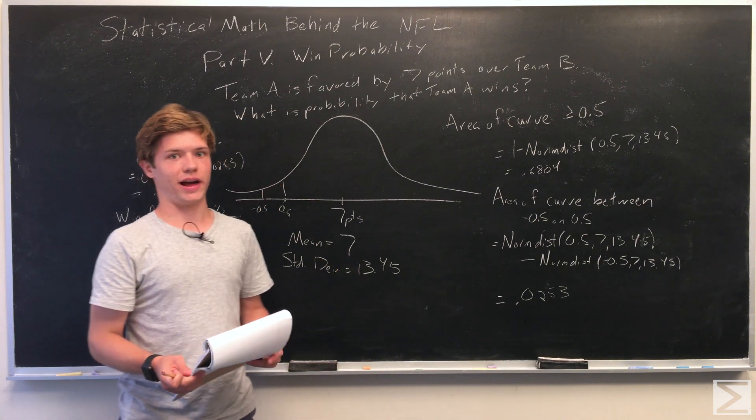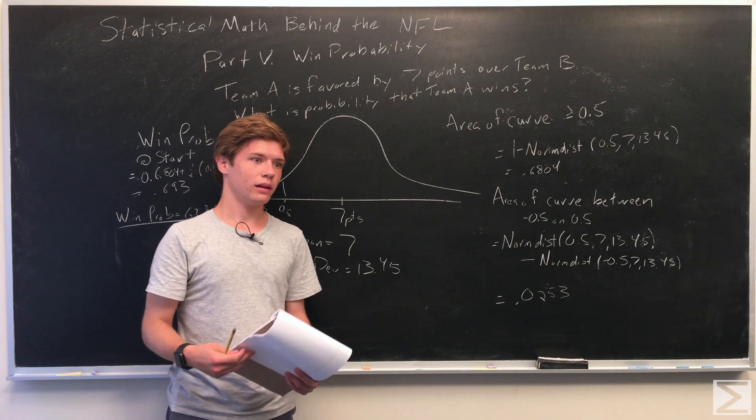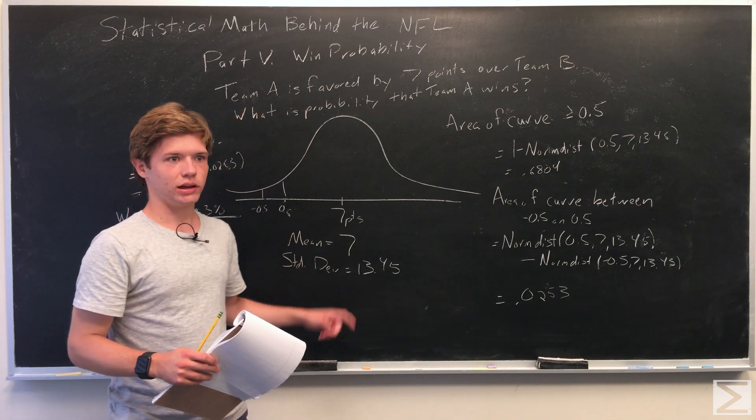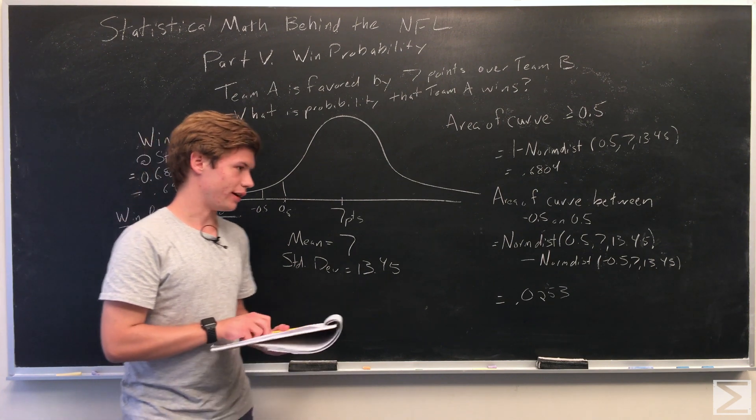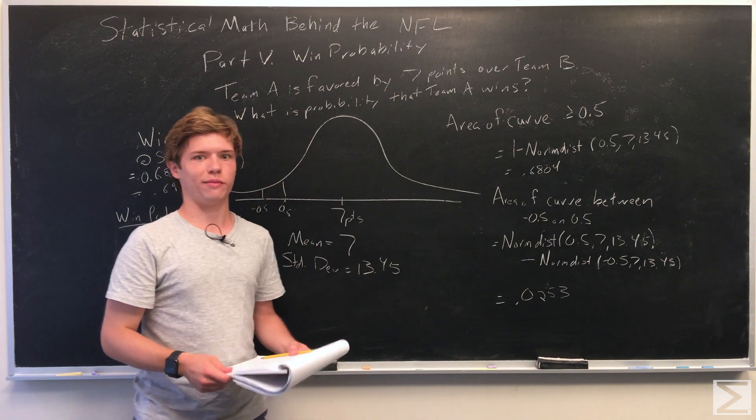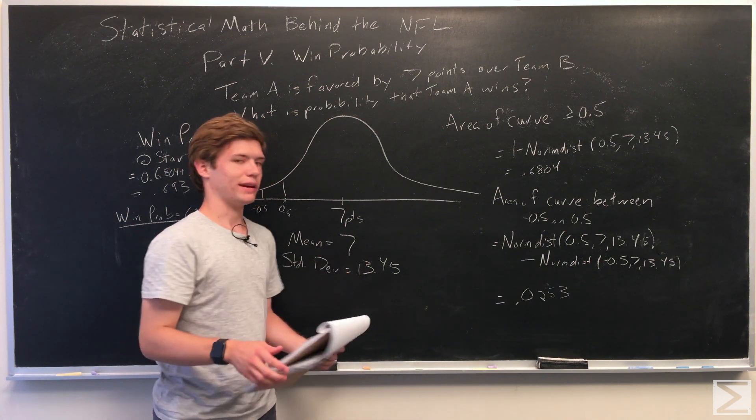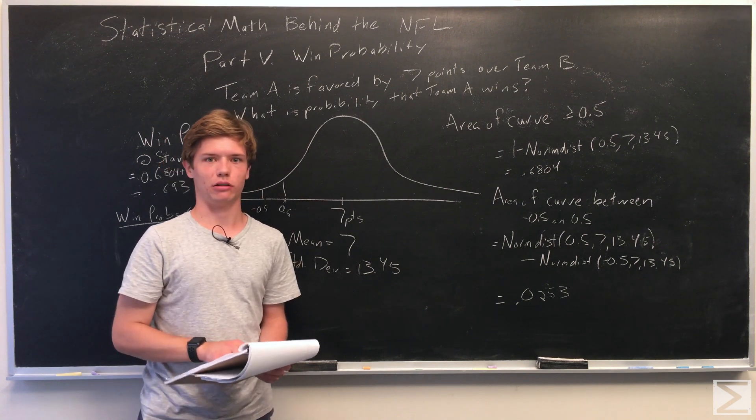And we also have to keep in fact that there's less time, so there's less variance in the outcome. So to figure out that, we take the standard deviation and multiply it by the percentage of the time left in the game. So if there are 45 minutes in the 60-minute game, we multiply 13.45 by 75% to get the new in-game win probability.